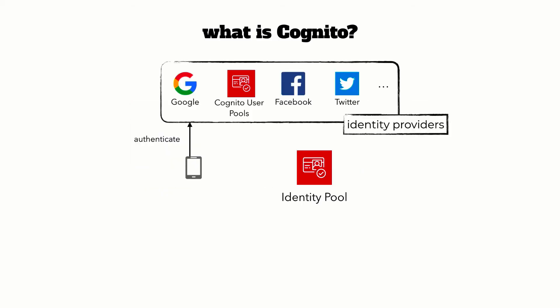In this case, you will authenticate against one of the supported identity providers, including Cognito user pool. And once you are authenticated, you will receive an authorization token from the provider which you can send to a Cognito identity pool. The identity pool would validate the token with the identity provider and issue you temporary AWS credentials in return that you can configure with the identity pool.